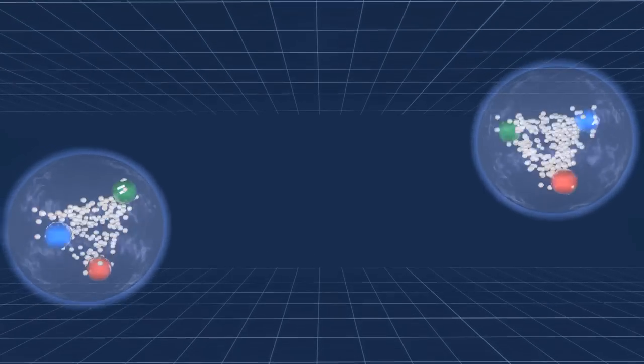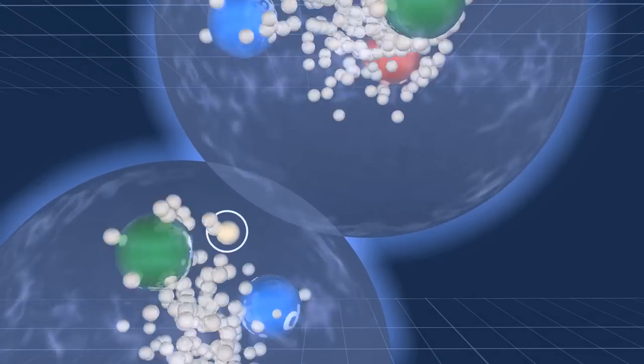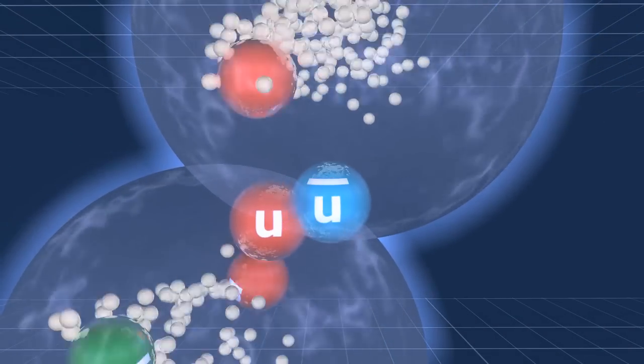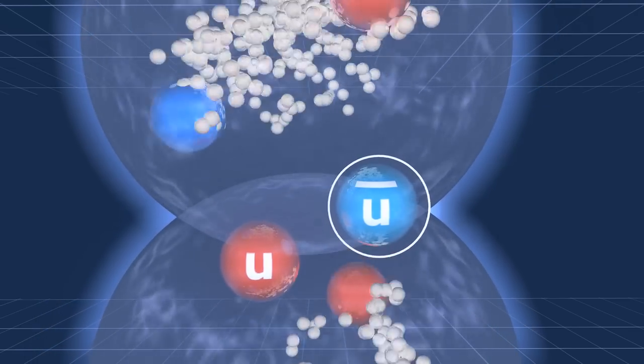When the two colliding protons get very close and overlap, a gluon from one of the protons transforms into a quark and an antiquark. The antiquark interacts with the quark from the other proton.